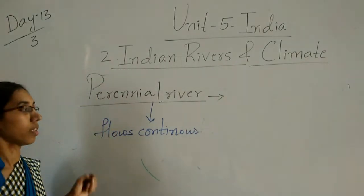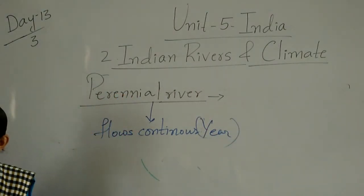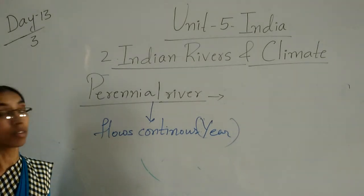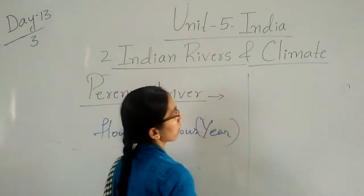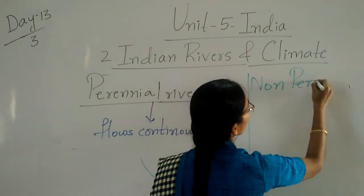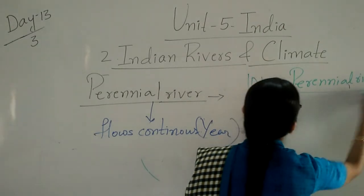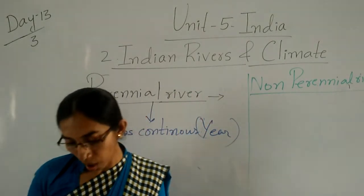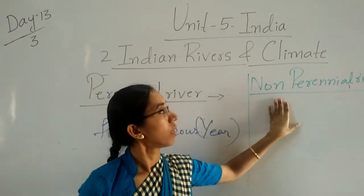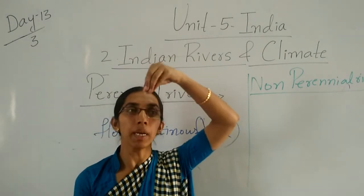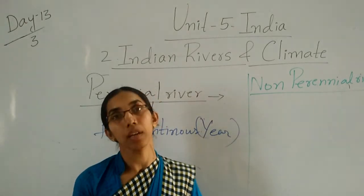They flow throughout the year — those rivers are called perennial rivers. Now, what is the meaning of non-perennial river? Non-perennial rivers depend upon rainwater. Those rivers which depend upon rainwater are called non-perennial rivers.